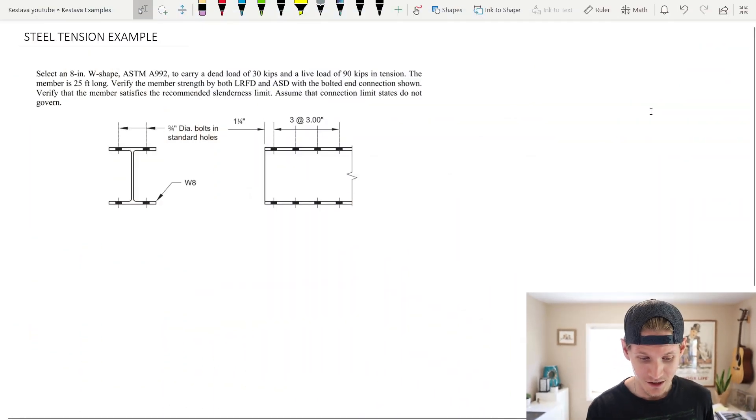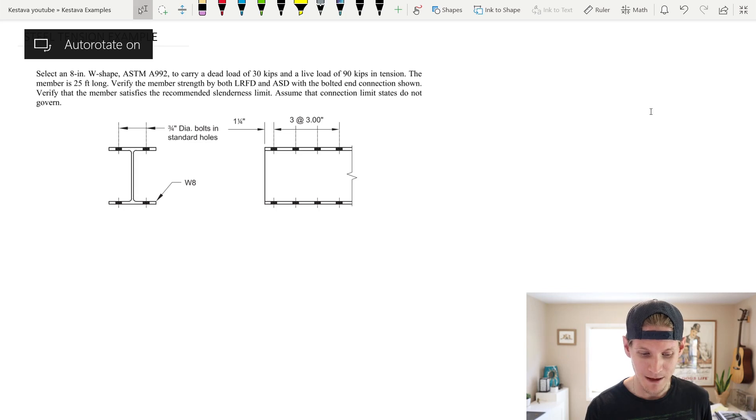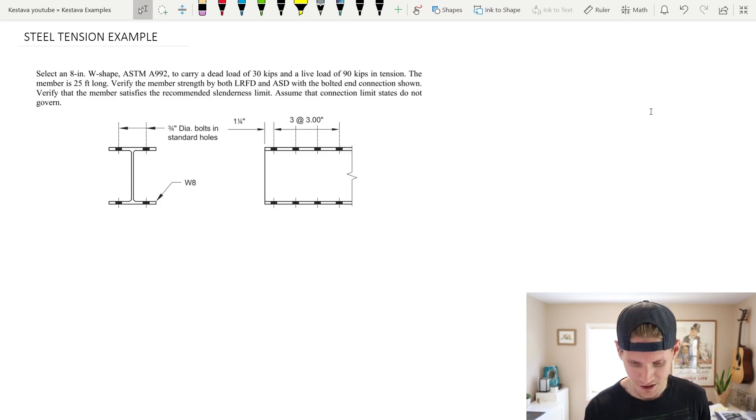Select an 8 inch W shape ASTM A992. That's the grade of steel. To carry a dead load of 30 kips and a live load of 90 kips in tension. Keynote there - tension. The member is 25 feet long. Verify the member's strength by both LRFD and ASD with the bolted end connection shown. Verify that the member satisfies the recommended slenderness limit. Holy shoot. What? Assume that connection limit states do not govern. All right. Well that's pretty helpful.